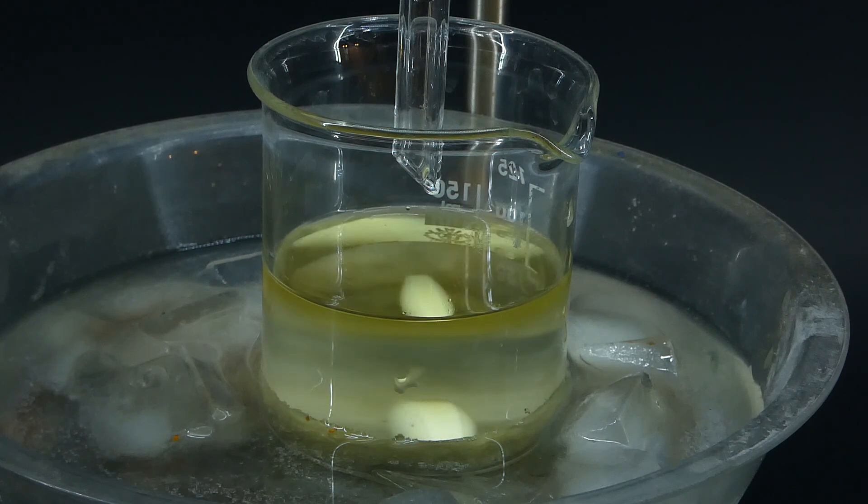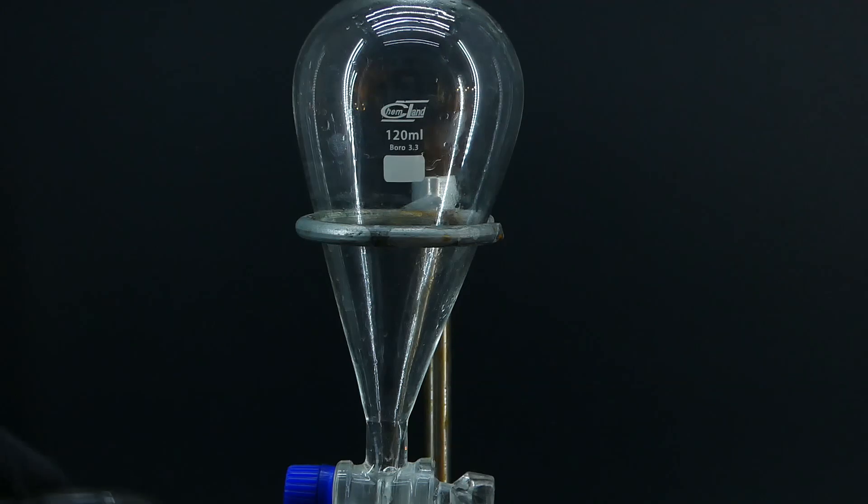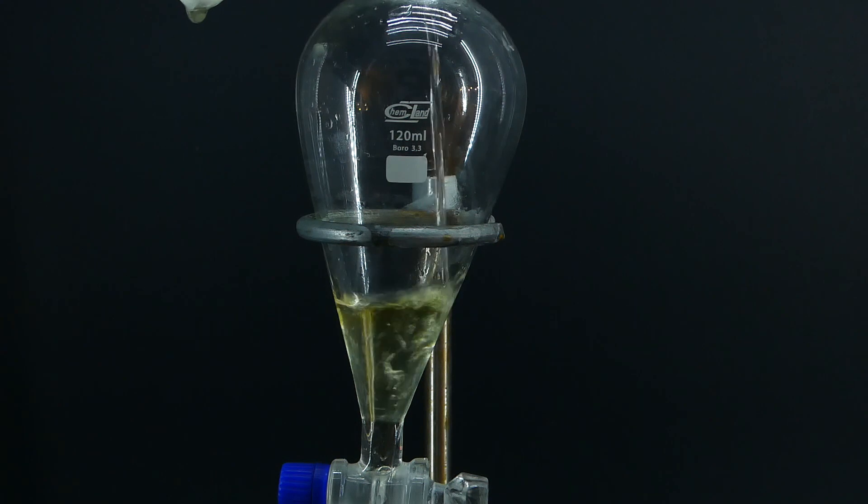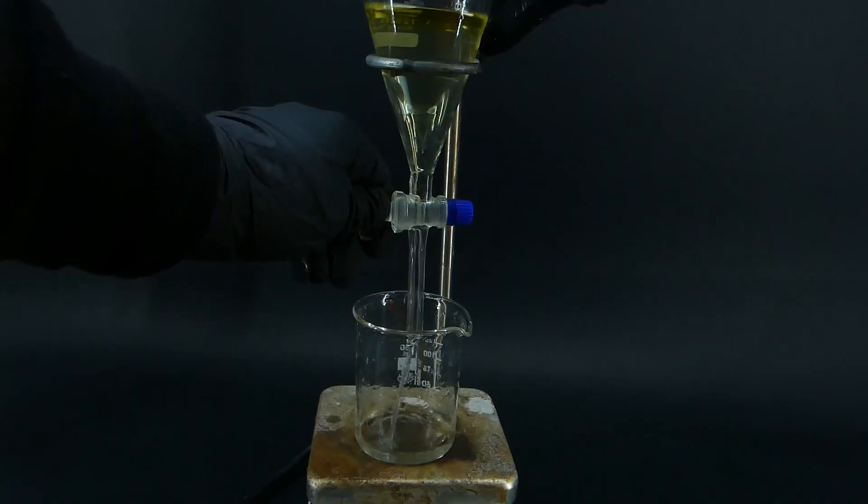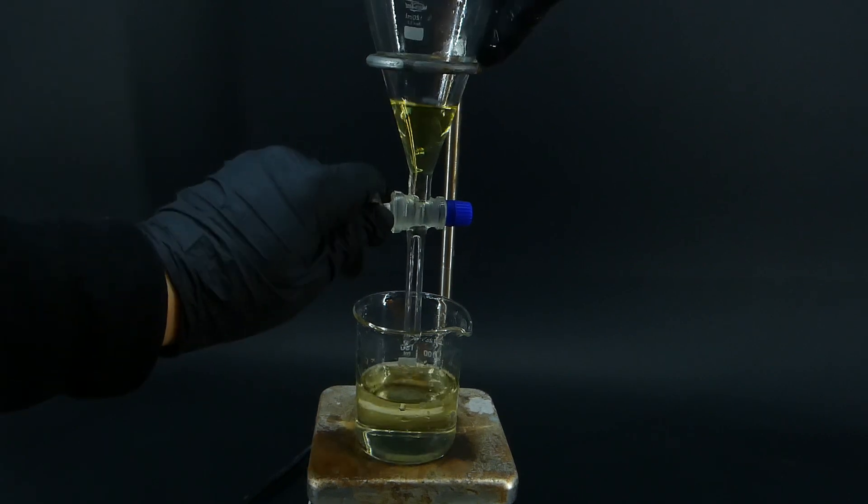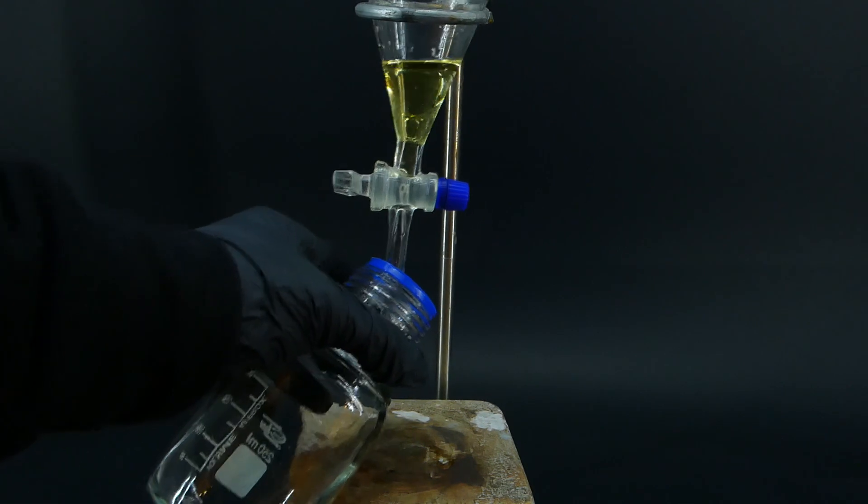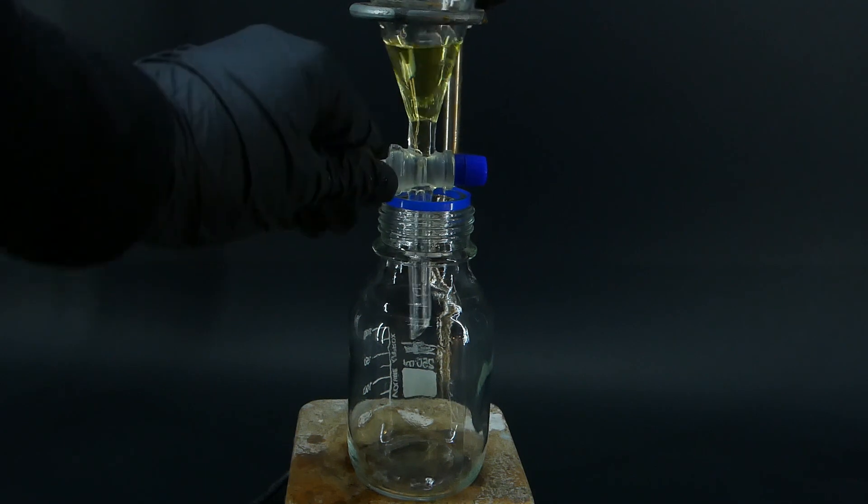The upper one is the isopropyl nitrite, which kinda looks like pee. To separate it, I put the entire mixture into a separatory funnel and slowly drained the water layer. After that, I poured all of the isopropyl nitrite into a bottle. I could do an additional washing step, but I was too lazy and decided not to.